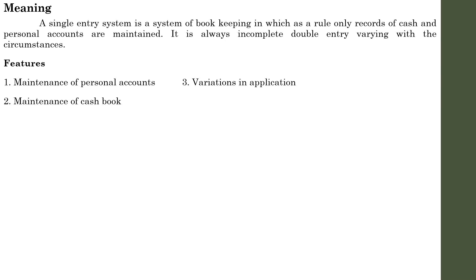Next feature: Variation in Application. There is no uniformity with regard to the recording of transactions. In Double Entry System, there is a proper rule and regulation on the basis of which we record and follow a system. But in Single Entry System, there is no uniformity, because they apply different methods in different situations. Since it has no fixed set of principles, it has variations in application from one business to another. Therefore, the Single Entry System lacks uniformity. That is one of the important issues with regard to Single Entry System.